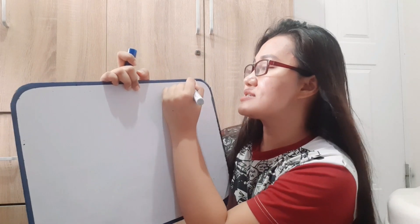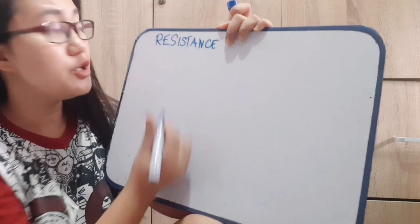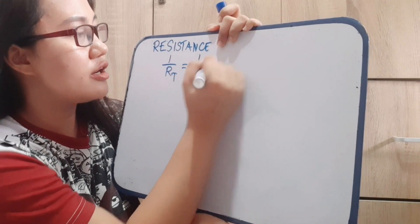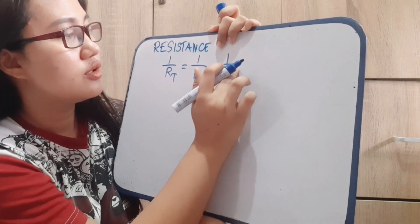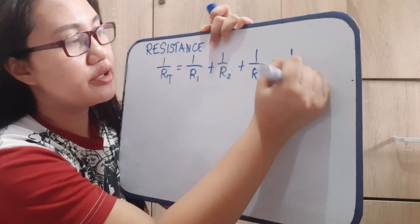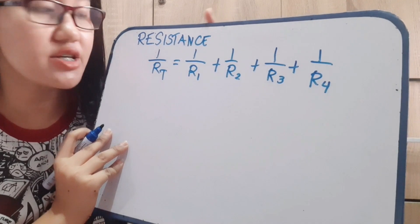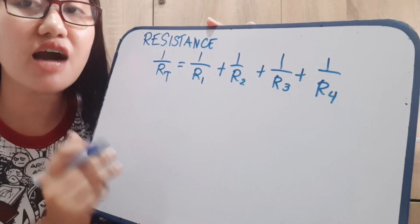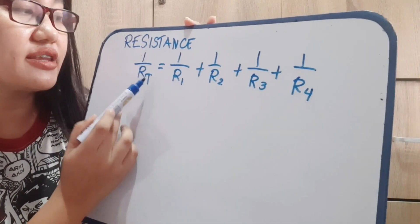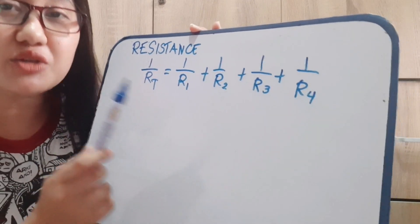For resistance, we will use 1 over RT equals 1 over R1 plus 1 over R2 plus 1 over R3 plus 1 over R4. So to get the total resistance of parallel circuit, we get the sum of the reciprocal of each resistance. The reciprocal of total resistance is equivalent to the sum of the reciprocal of each resistances.